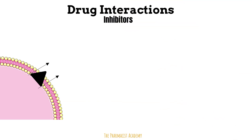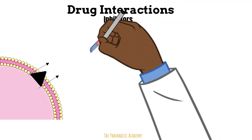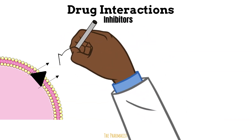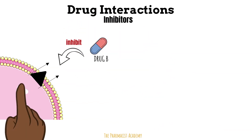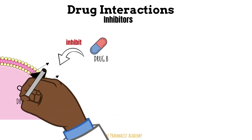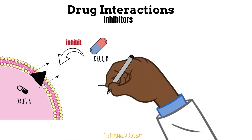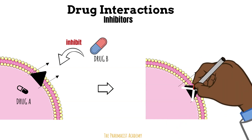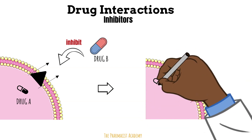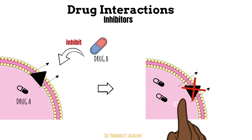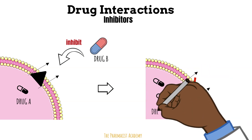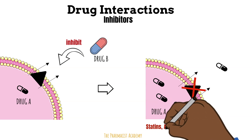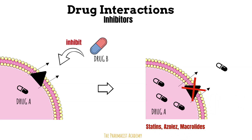The inhibitors of the P-glycoprotein lead to an opposite effect. Now we have drug B, which will inhibit a P-glycoprotein that drug A is normally a substrate for. Because of the inhibition, the drugs that are substrates of the P-glycoprotein inside the cell won't get kicked out, leading to a potential increase in the therapeutic effect. And here are some examples of strong to moderate inhibitors.